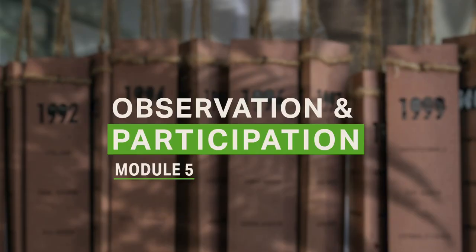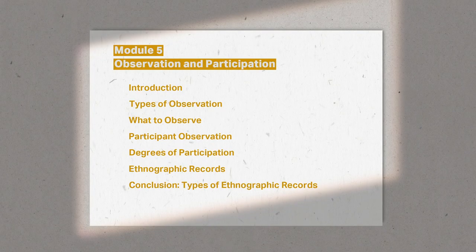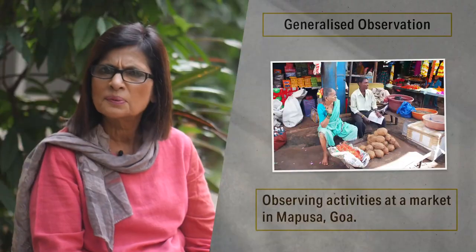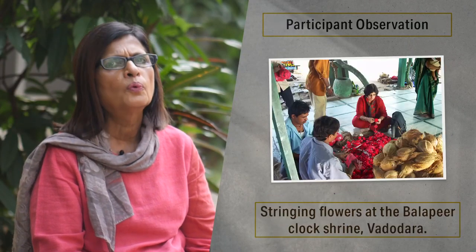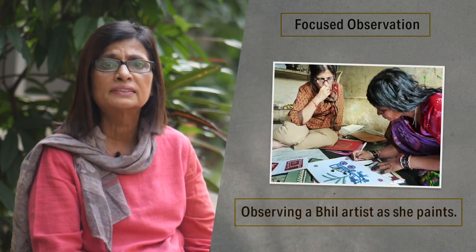In module five, we discuss observation and participation as ways of engaging with the other and learning from them. What does it mean to observe? What are the different ways of observing? What all do we observe? And how do we make sense of our observations? These are some of the questions we address in this module. We also explore participating in the context and discover the kinds of knowledge we can access through participant observation.